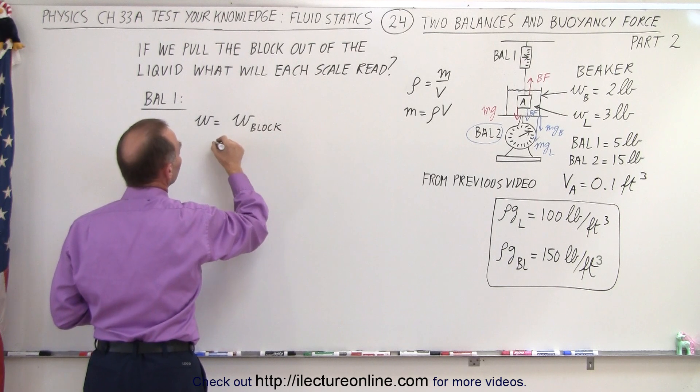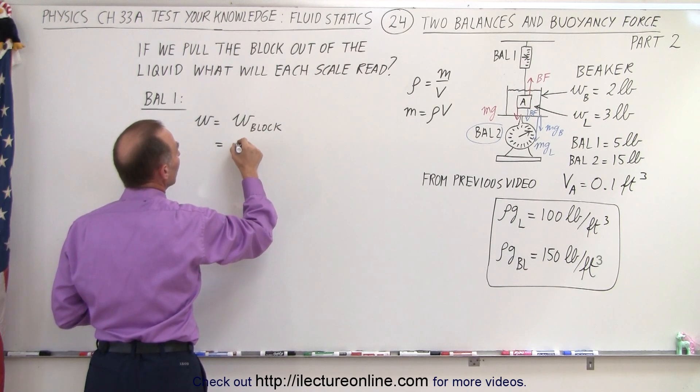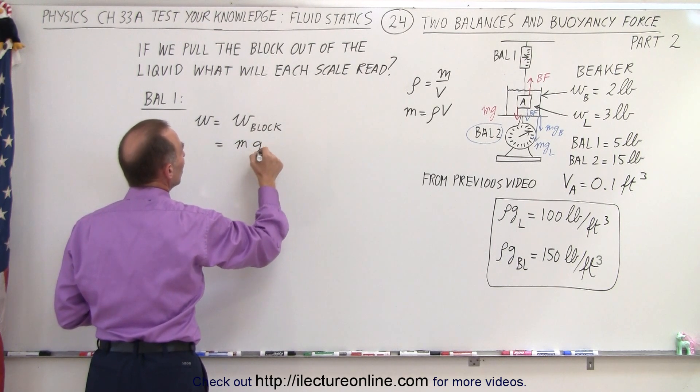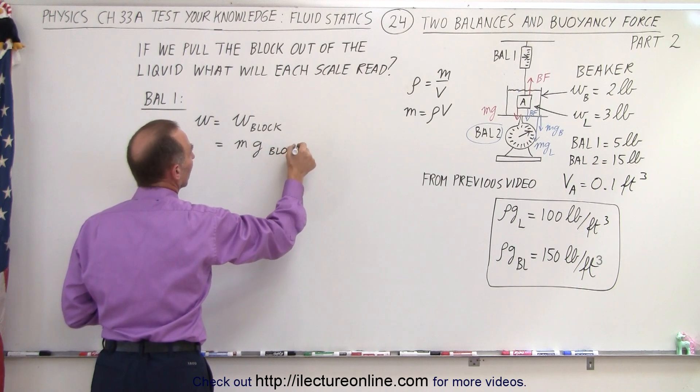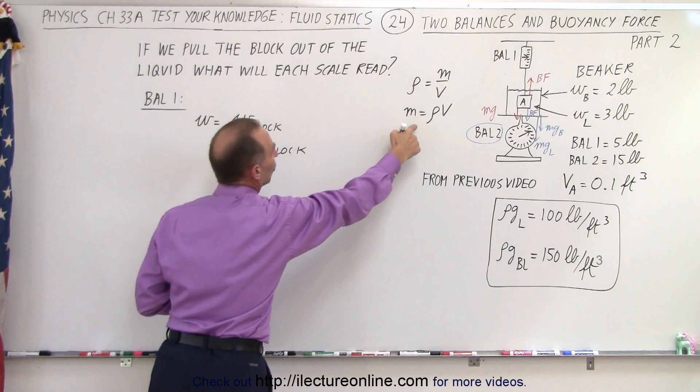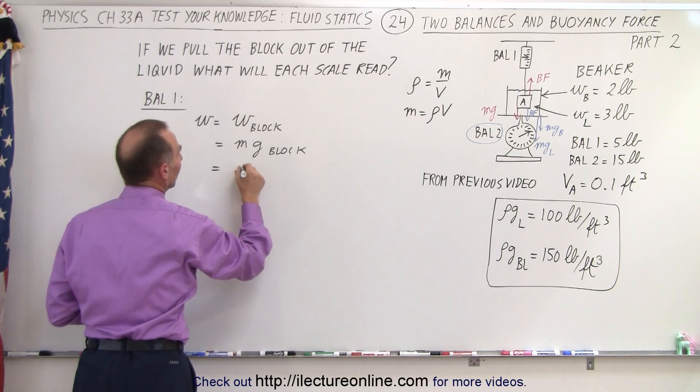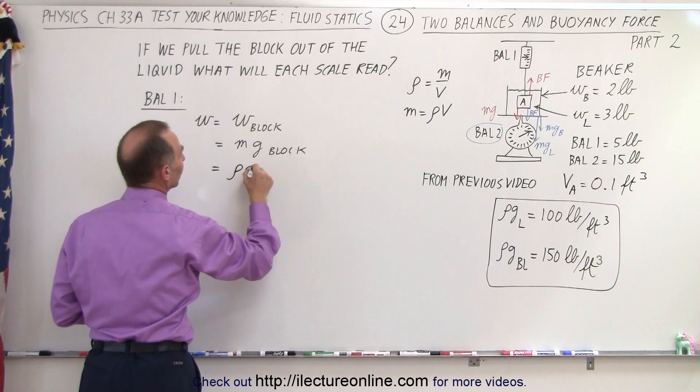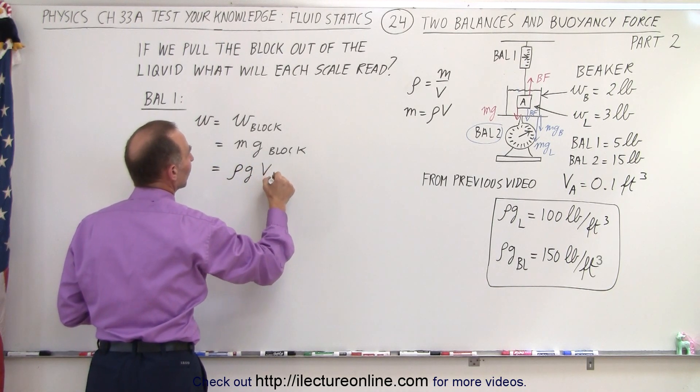Now the weight of the block is equal to the mass of the block times G, and of course using this relationship we can write this as the density of the block times G times the volume of the block.